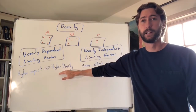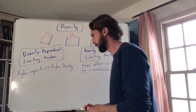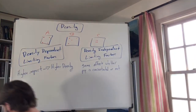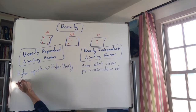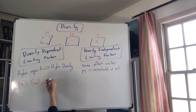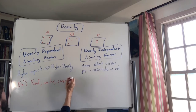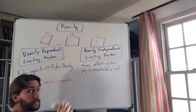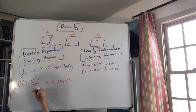Examples of density dependent limiting factors include food, water, competition, and even disease. Think of resources like these as density dependent.